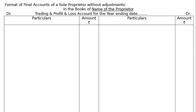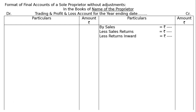Starting from the credit side: all trading incomes or factory incomes and items in balance at the factory or business house are shown, including sales. The first item is sales — write it in the inside column. Then deduct 'less sales returns' (also called returns inward — same thing). Also deduct 'less goods sent on sale or approval basis at sale price.'